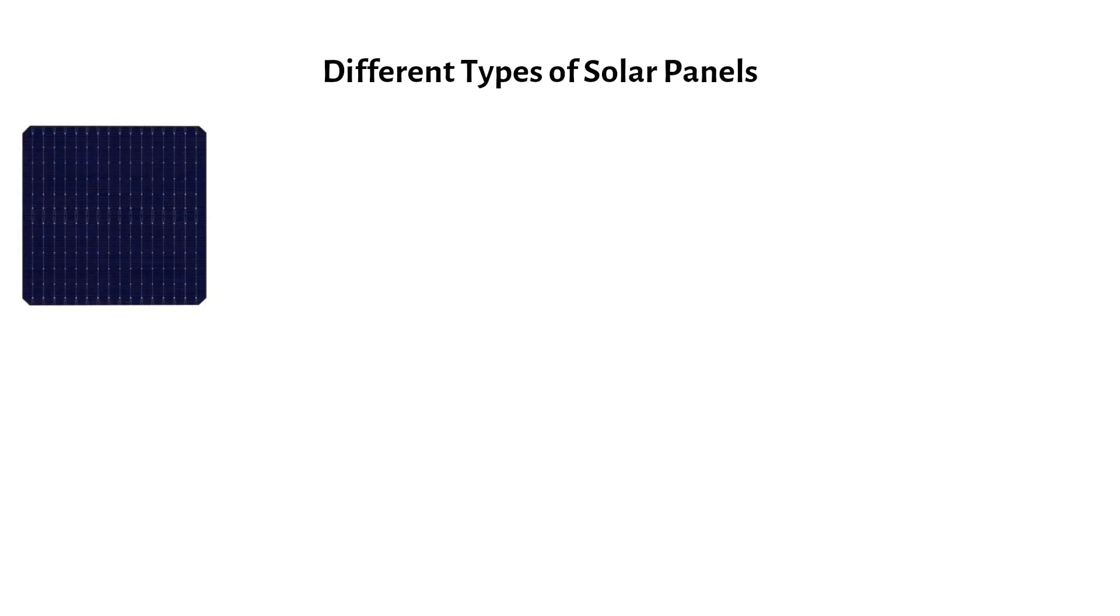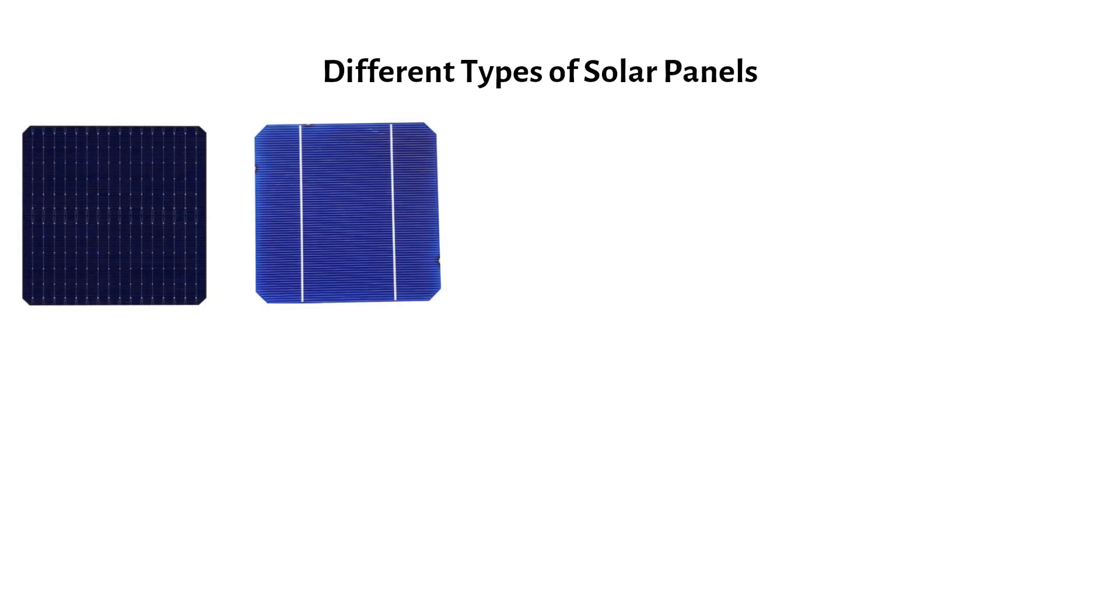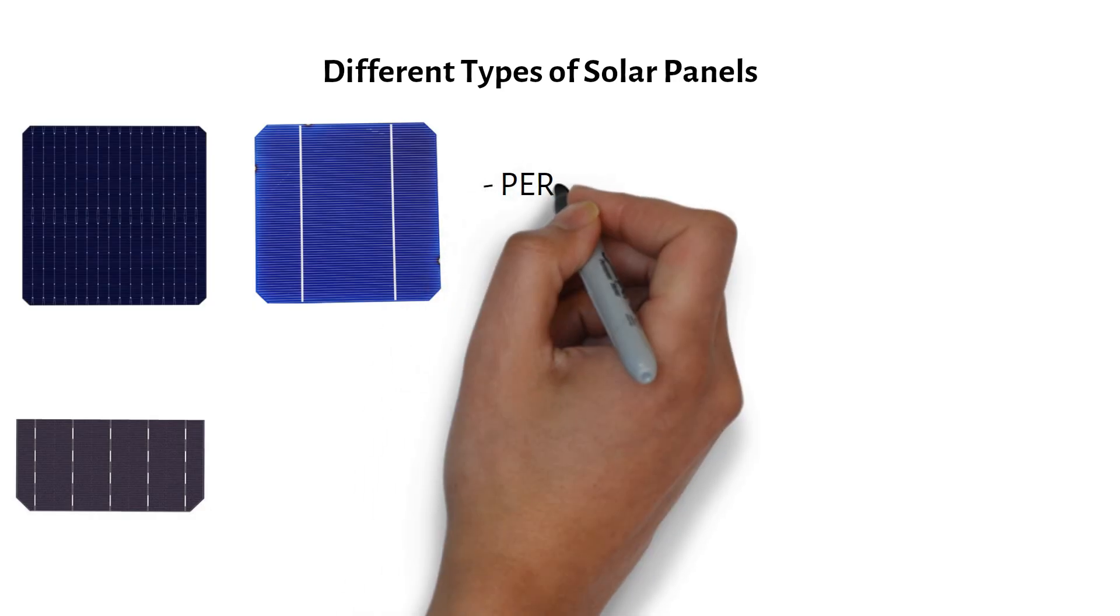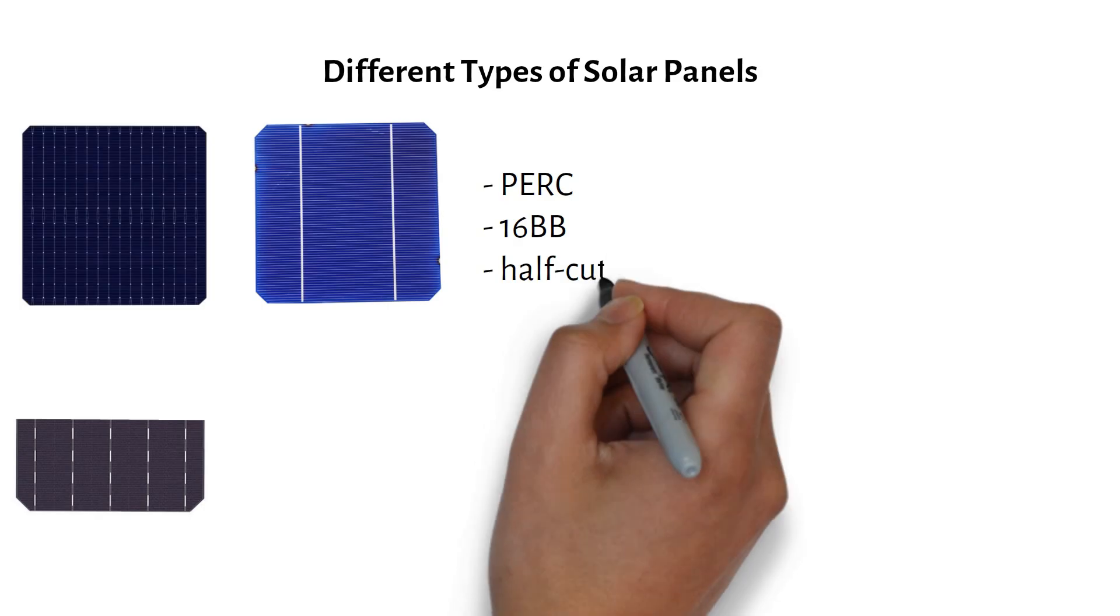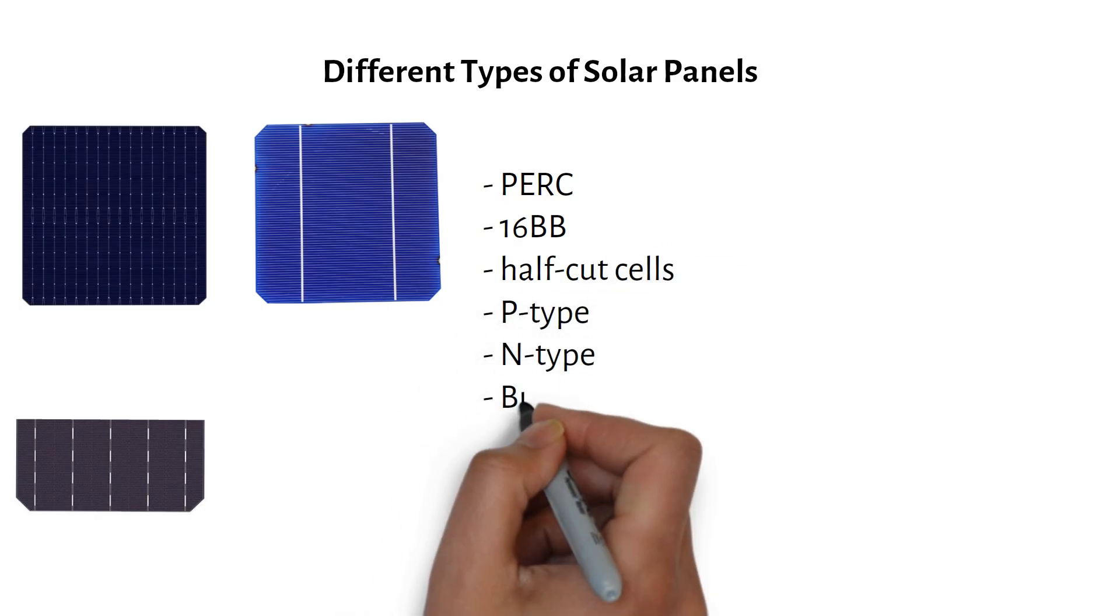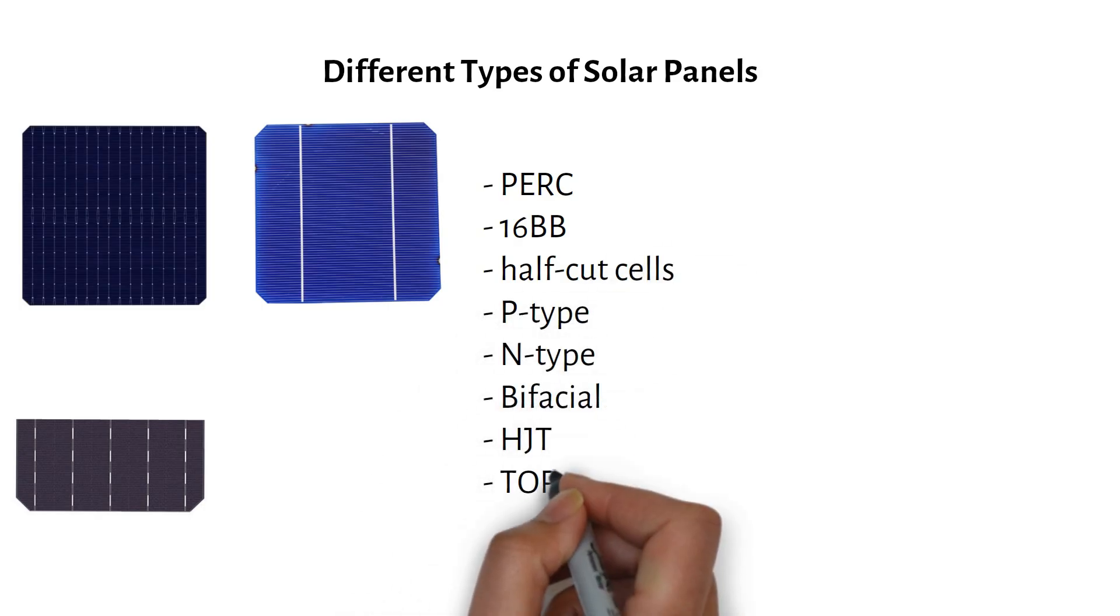There are many different types of solar panels and it can become confusing. In this video I'll break down several solar cell technologies like PERC, 16BB, half cut cells, p-type, n-type, bifacial, HJT and TOPCON.